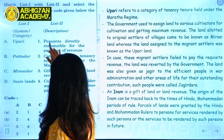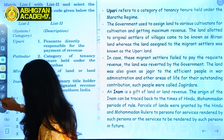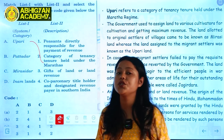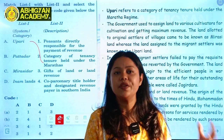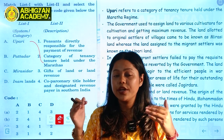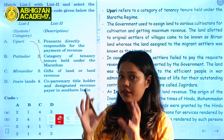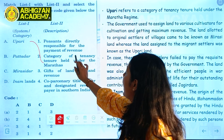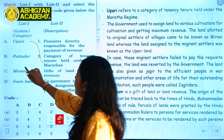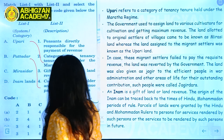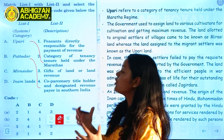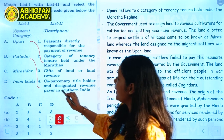Upari is the category of tenants whose tenure was held under the Marathas. The rulers used to give land for cultivation; from whatever profit the cultivators earned, they paid revenue to the king. Patadar refers to co-parcenary title holders and designated revenue payers in southern India — this term was used in the southern Indian region.